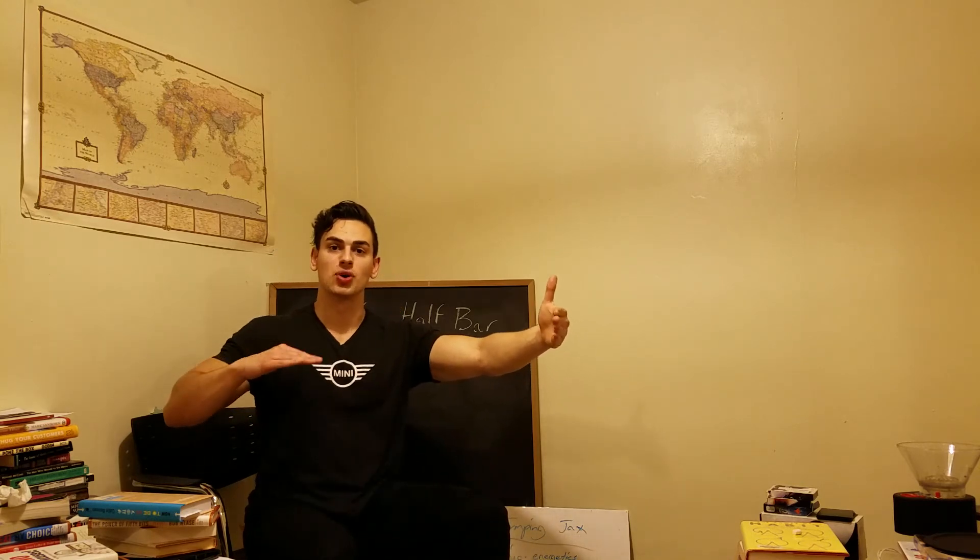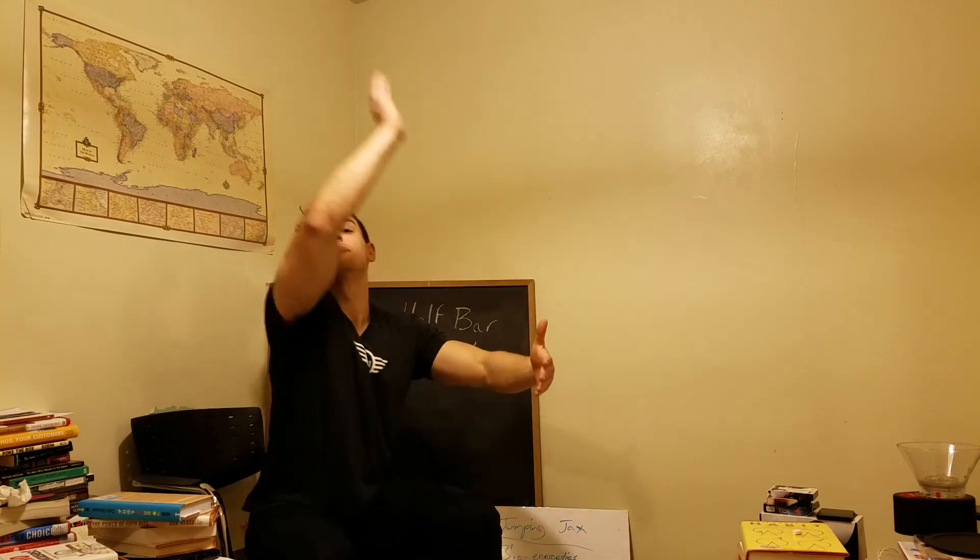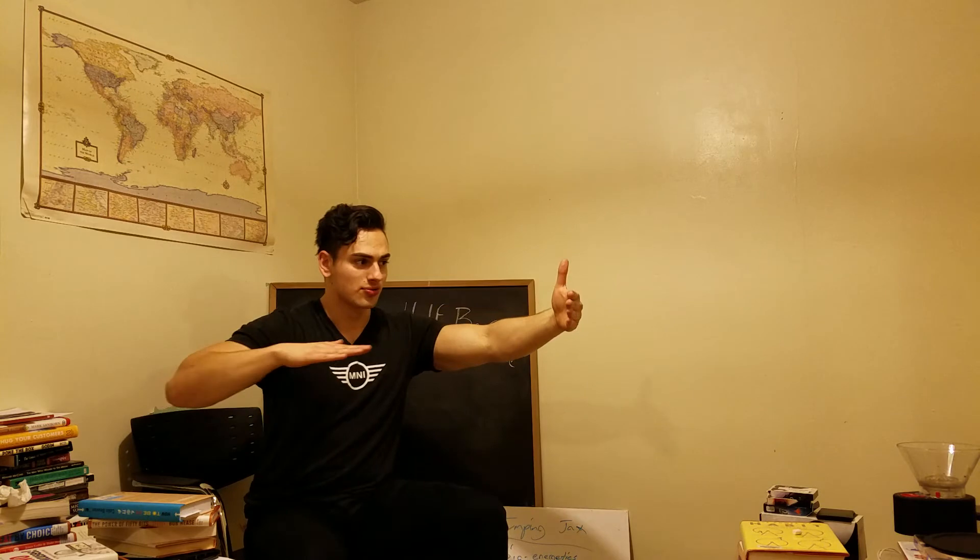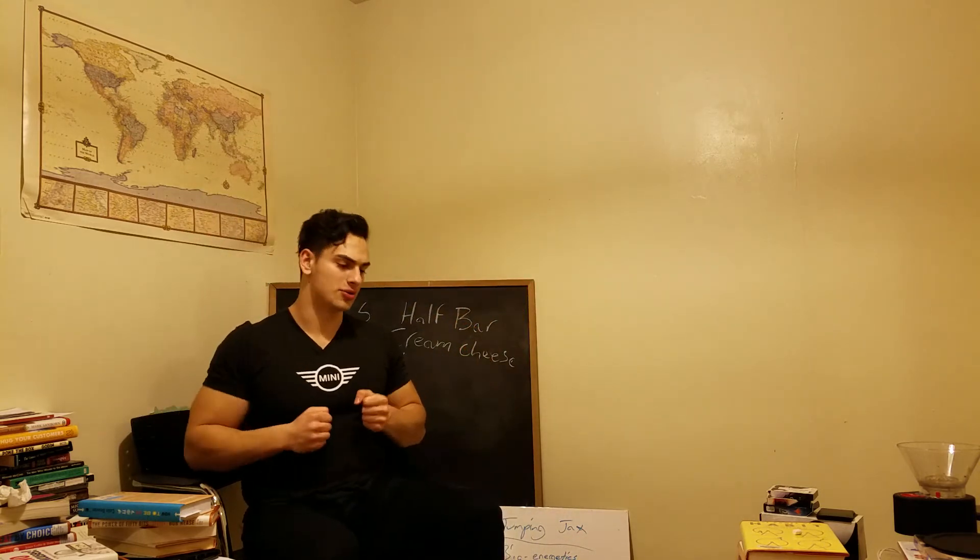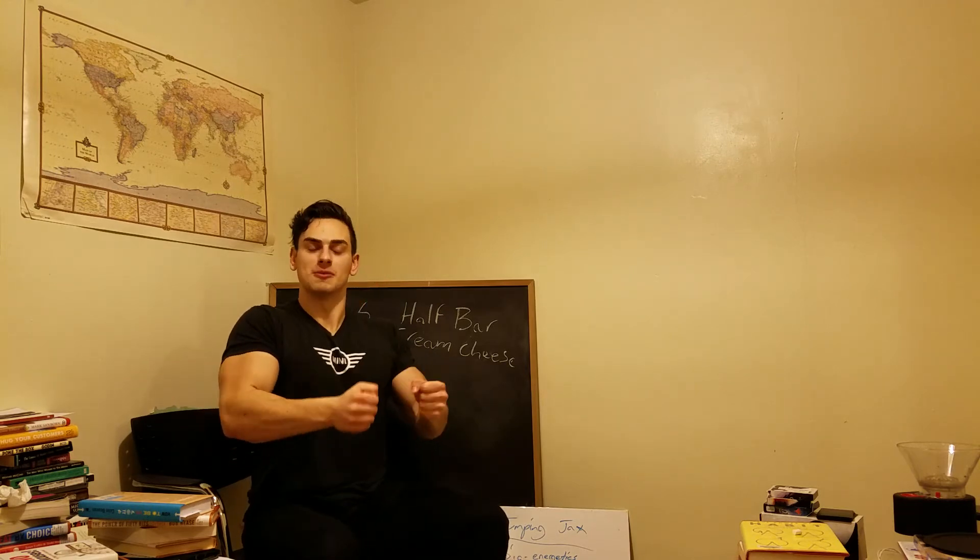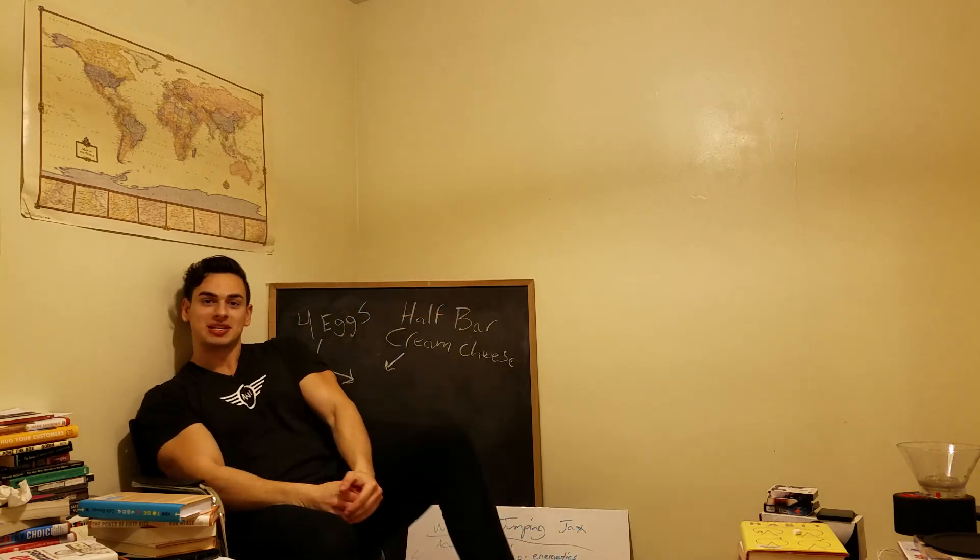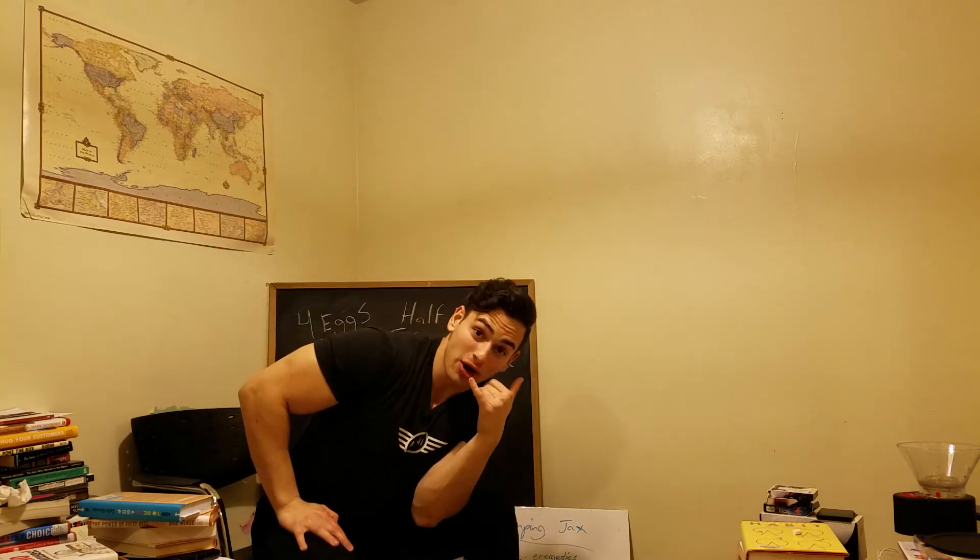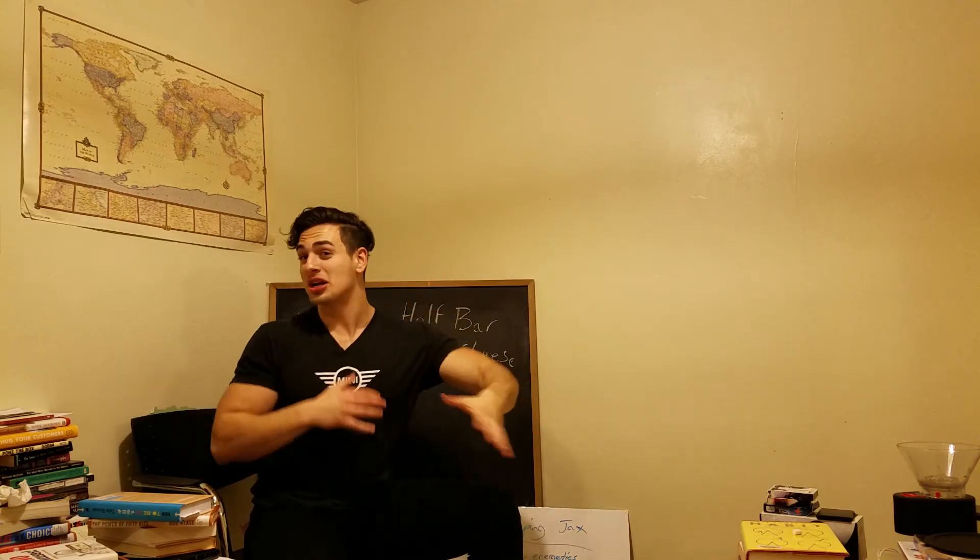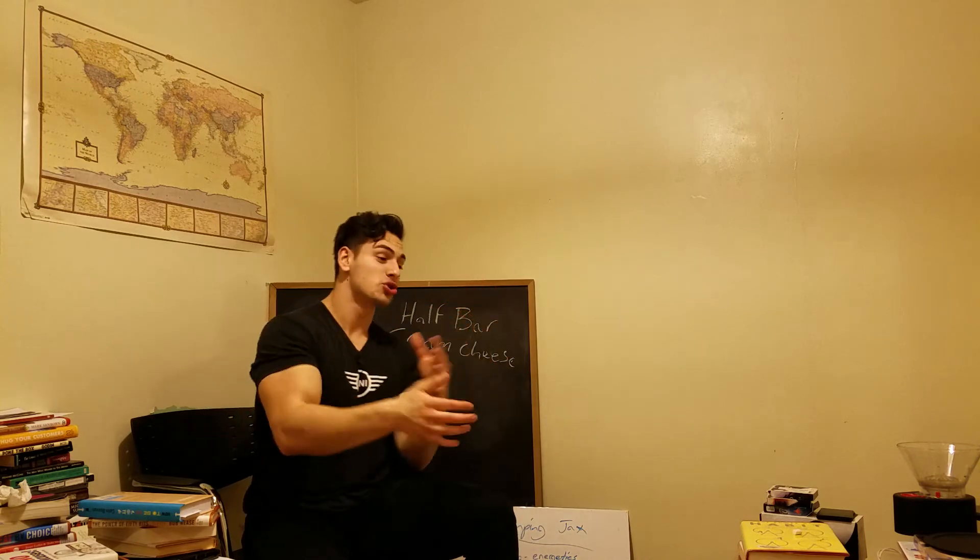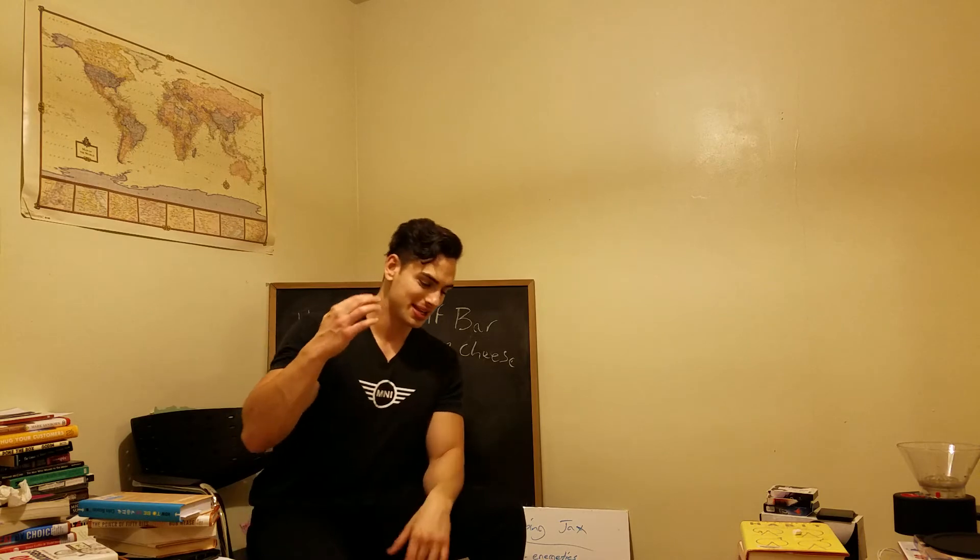He does a couple test runs and he counts. One Mississippi, two Mississippi. One one thousand, two one thousand, three one thousand, and then he pulls up. And then he goes back again. One one thousand, two one thousand, three one thousand, four one thousand, pulls up. And he times it just right. So he goes back and he unloads. One one thousand, two one thousand, three one thousand. Unloaded on these guys. Another direct hit. Another direct hit. Pulls up. Pounding in his chest.